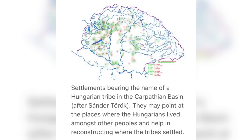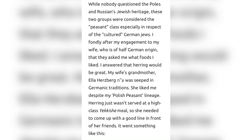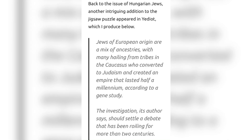I'm going to go deeper into this in the next videos when I break down the family tree. We've all read anecdotes such as: 'I recently met a Jewish woman from Hungary. She is in her 80s. She told me that her family were descended from the Khazars who traveled with the Magyars into what is now the lovely land of Hungary. She said they were part of the Ten Arrows. She said her family converted to Judaism thousands of years ago after the Khazars met ancient Hebrews.' The blog also notes that Jews of European origin are of mixed ancestries, with many hailing from tribes in the Caucasus who converted to Judaism and created an empire that lasted half a millennium.